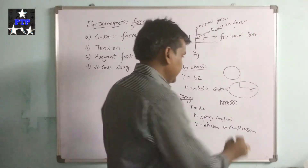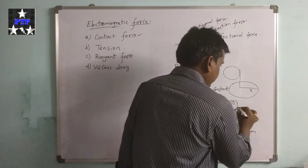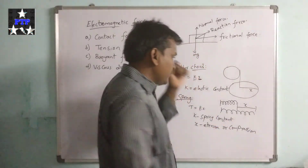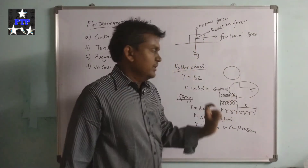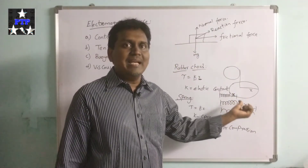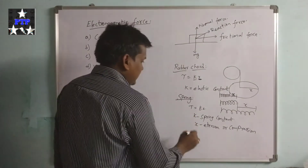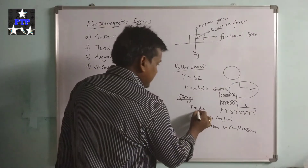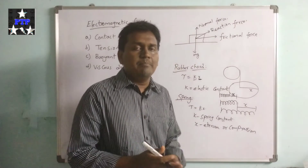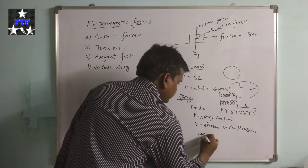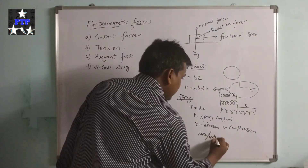Consider the normal state of a spring. When it is elongated, that extended length is the extension X. When the spring is compressed, the compressed length is the compression X. The formula for spring constant K comes from the force we apply on the spring for elongating as well as for compression.